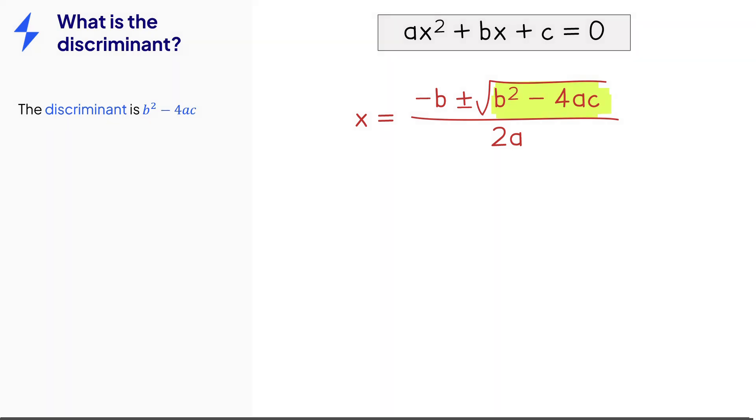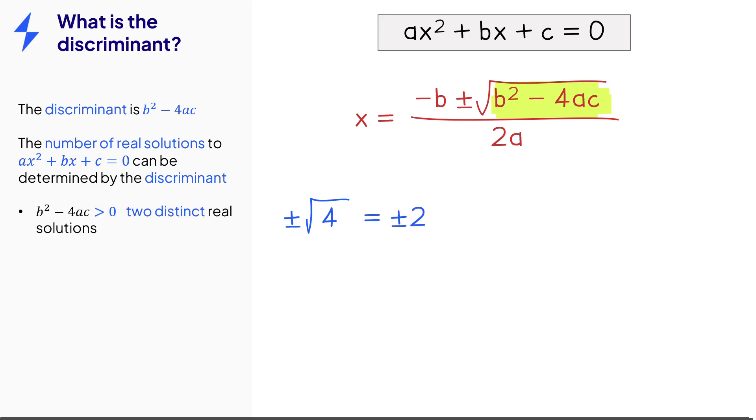The discriminant is important as it tells us how many real solutions the quadratic equation has. If the discriminant is positive, then it will have two square roots. So the formula will lead to two distinct real solutions. That means two different real solutions.